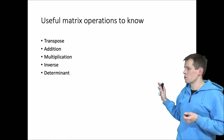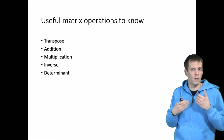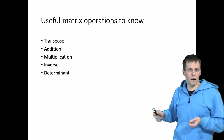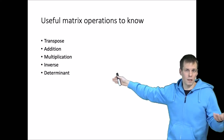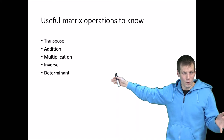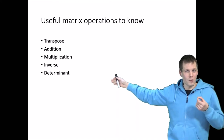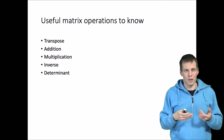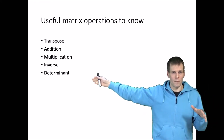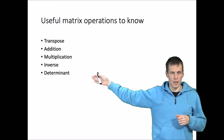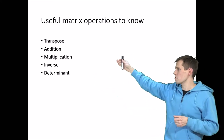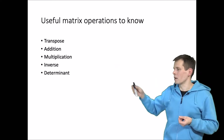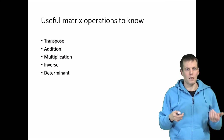Let's take a look at some useful matrix operations. There are many matrix operations, but only a few you need to know to understand the basics: transpose, addition, multiplication, inverse, and determinant. The determinant is important because it is the matrix equivalent of zero — you need to know that you can't divide by zero, and checking the determinant tells you whether certain calculations are possible. Transpose, addition, multiplication, and inverse correspond to the basic math operations: plus, product, and division.